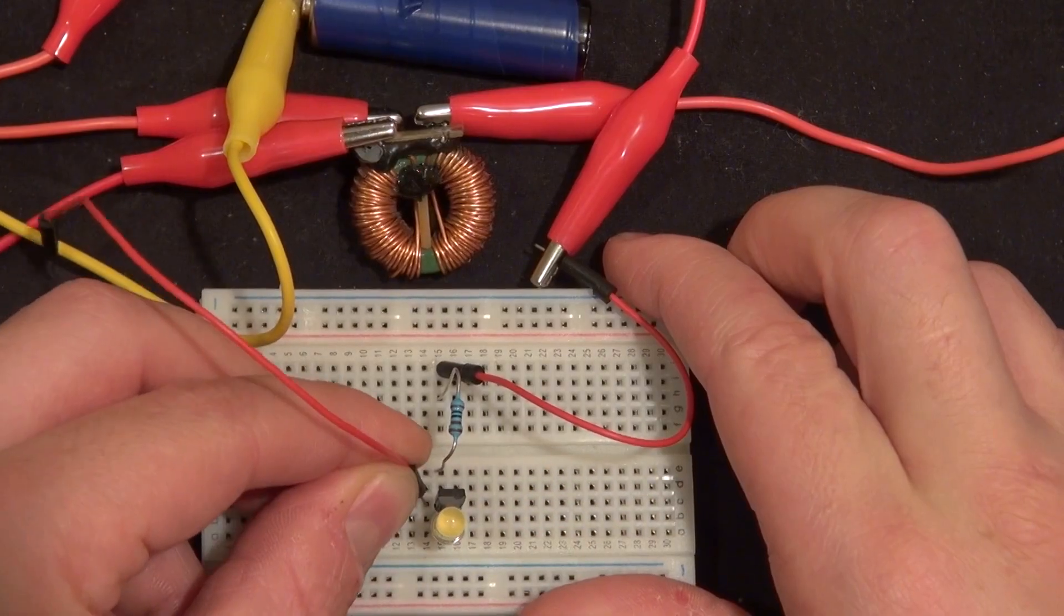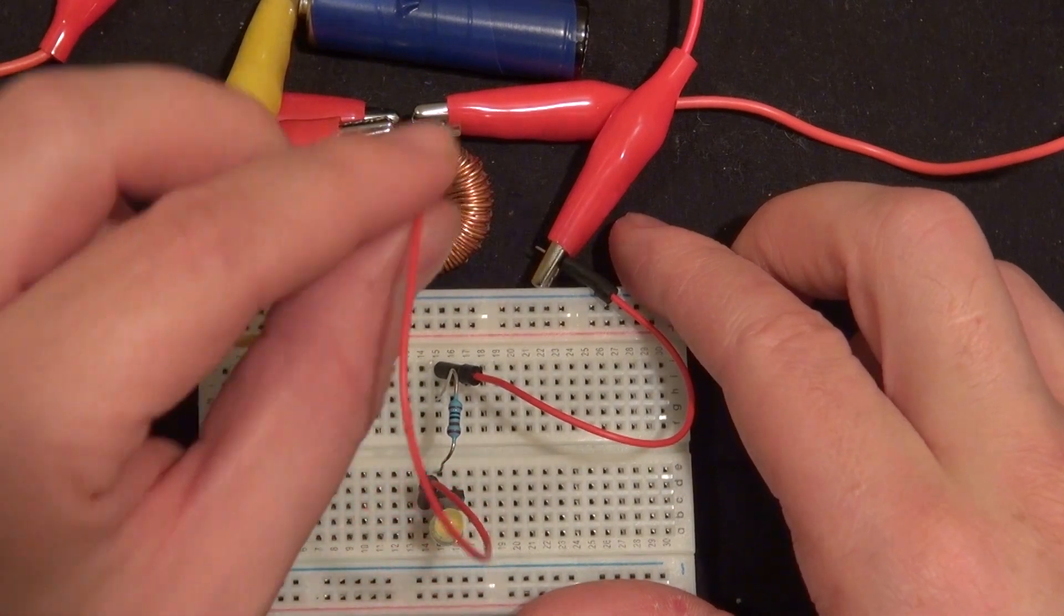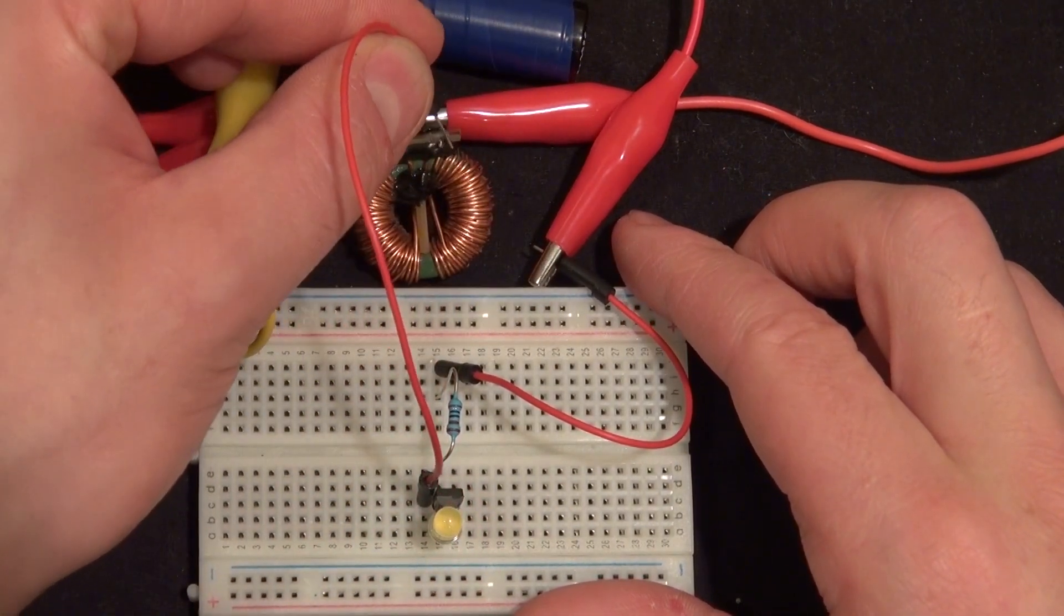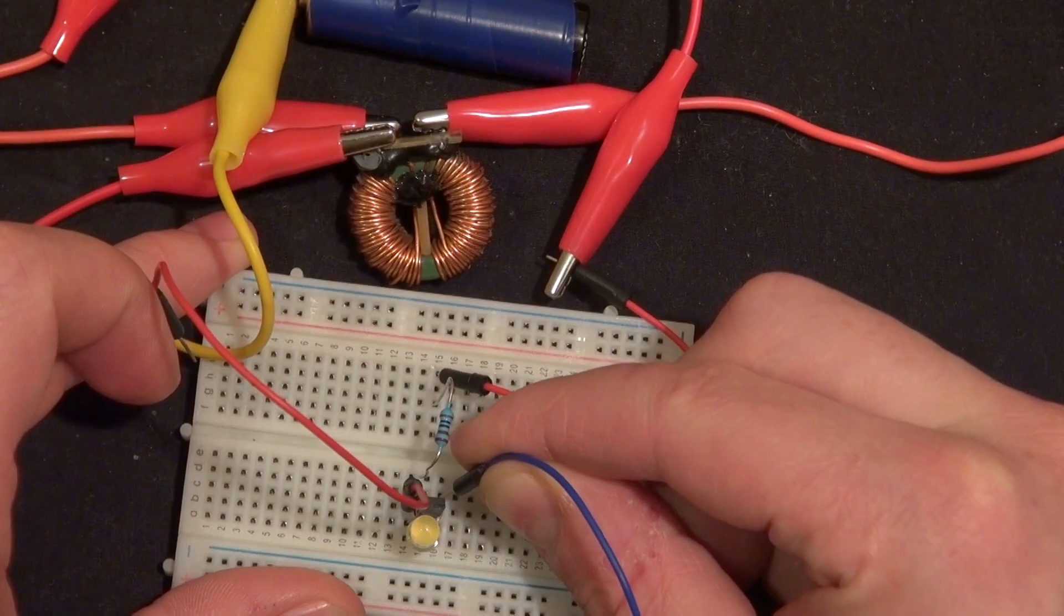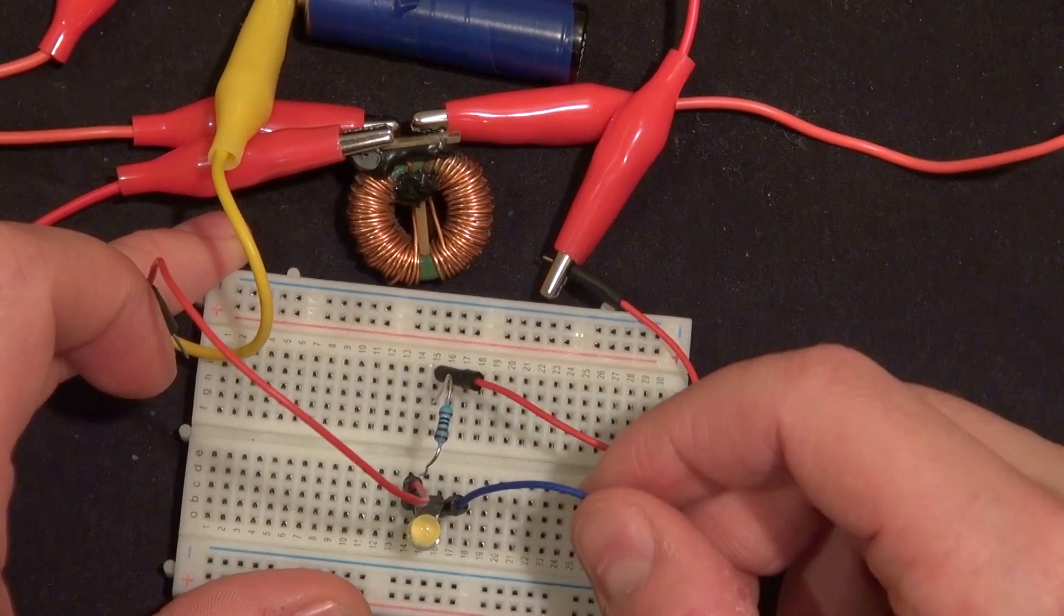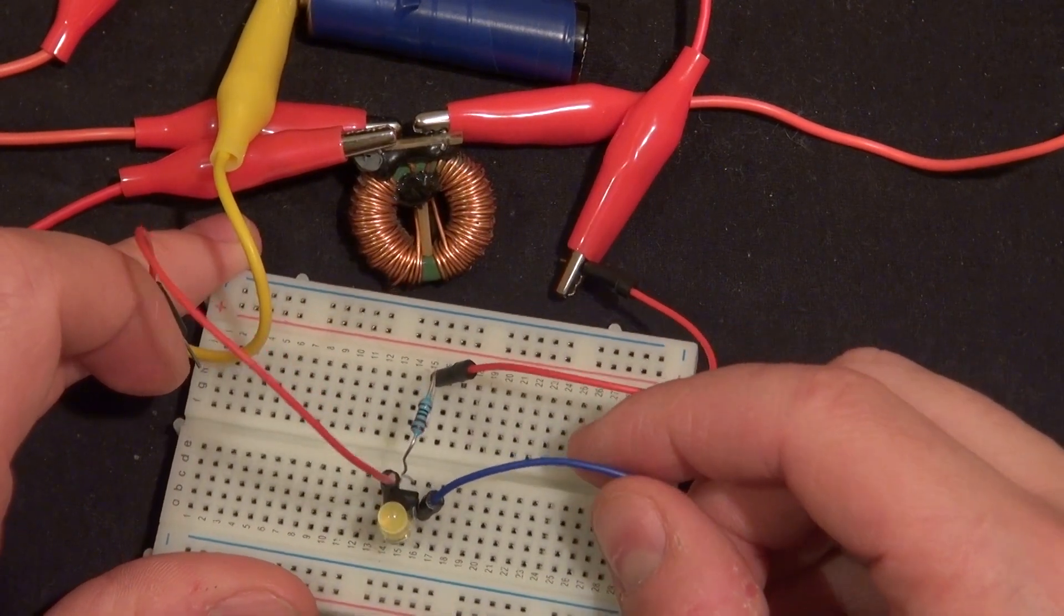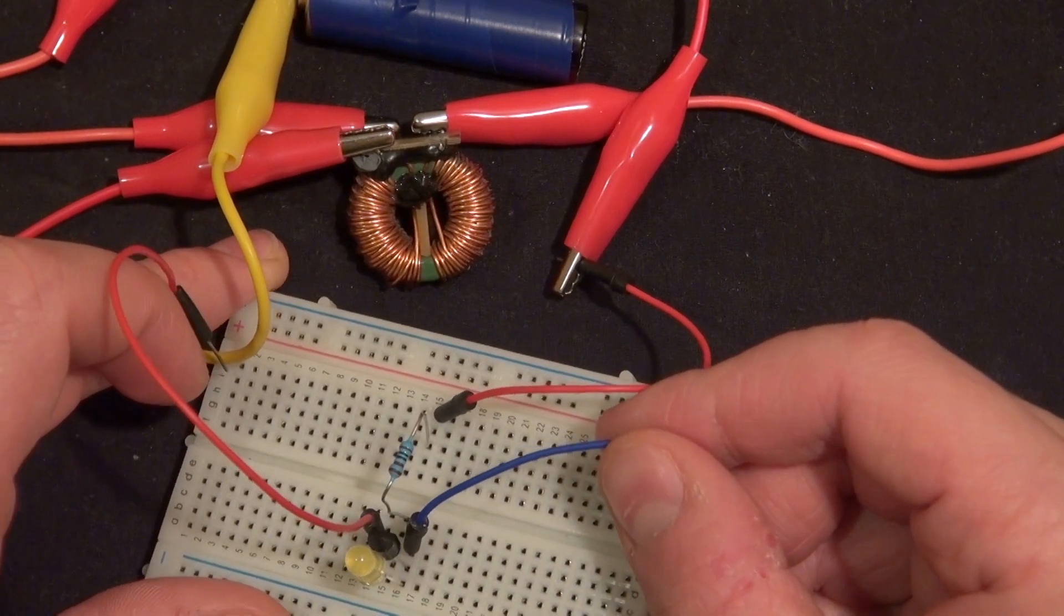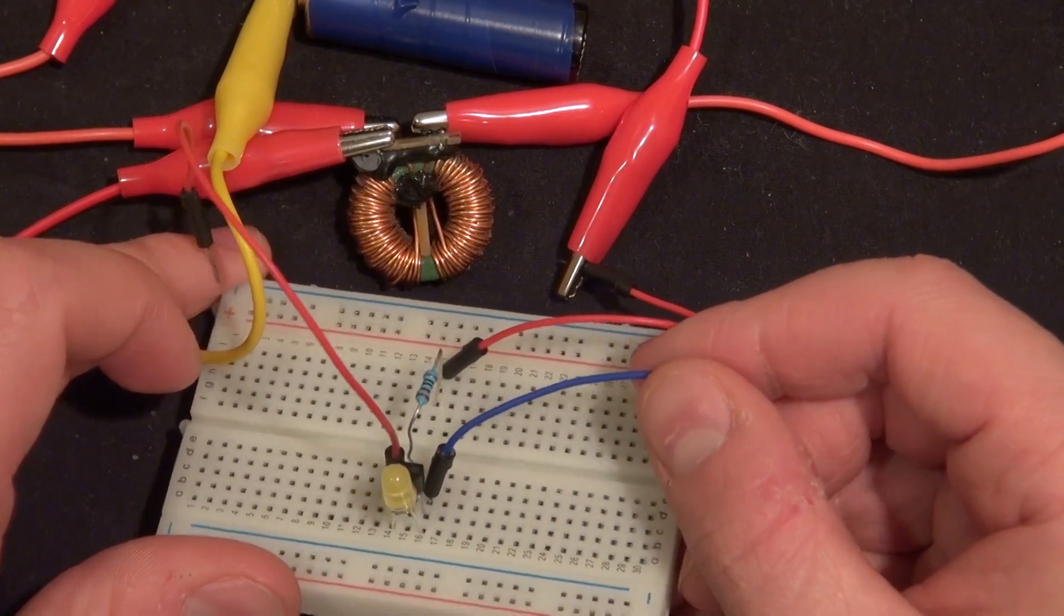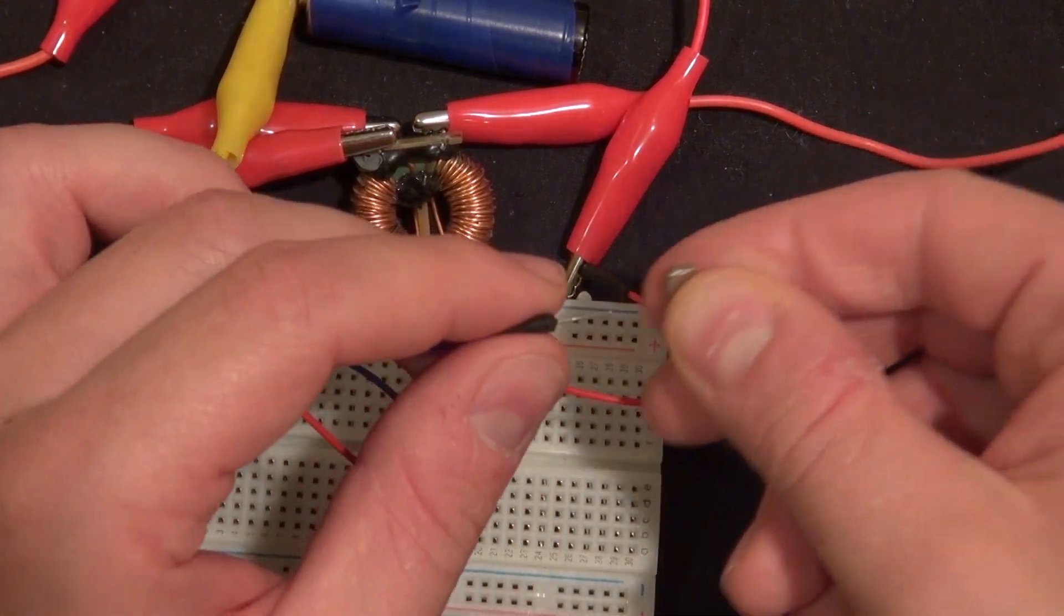And this connection that's connected to the transistor goes on to that blank lead on the inductor. Now I'm taking another jumper cable and connecting the other side of the transistor and connecting the neodymium magnet to the negative of the battery.